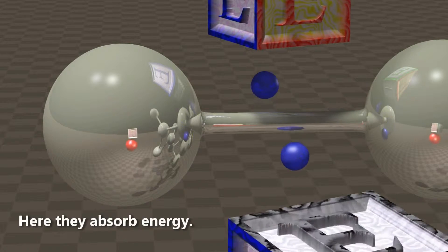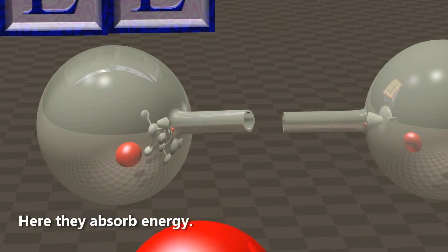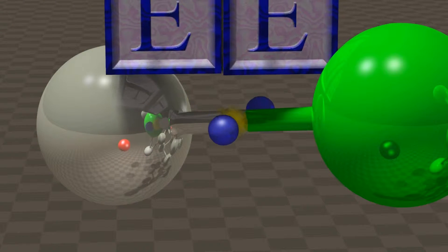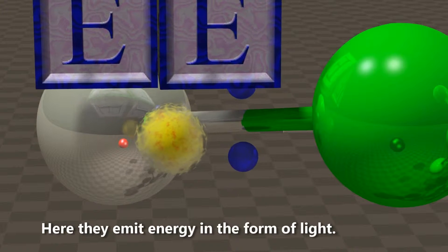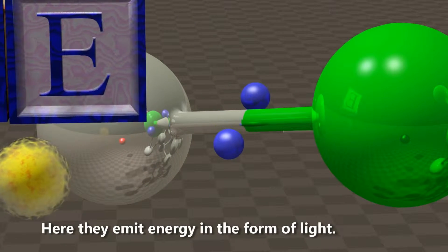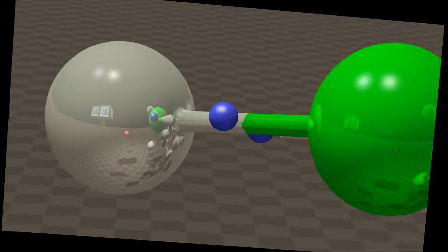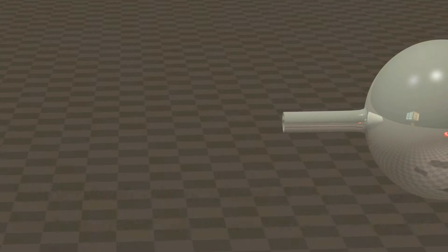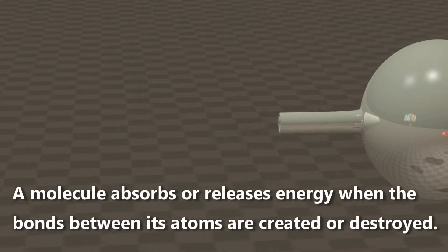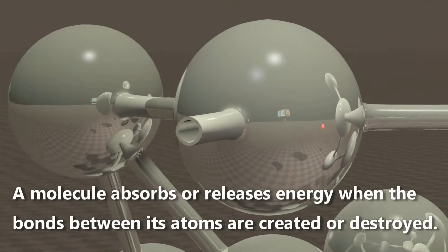Here, they absorb energy. Here, they emit energy in the form of light. A molecule absorbs or releases energy when the bonds between its atoms are created or destroyed.